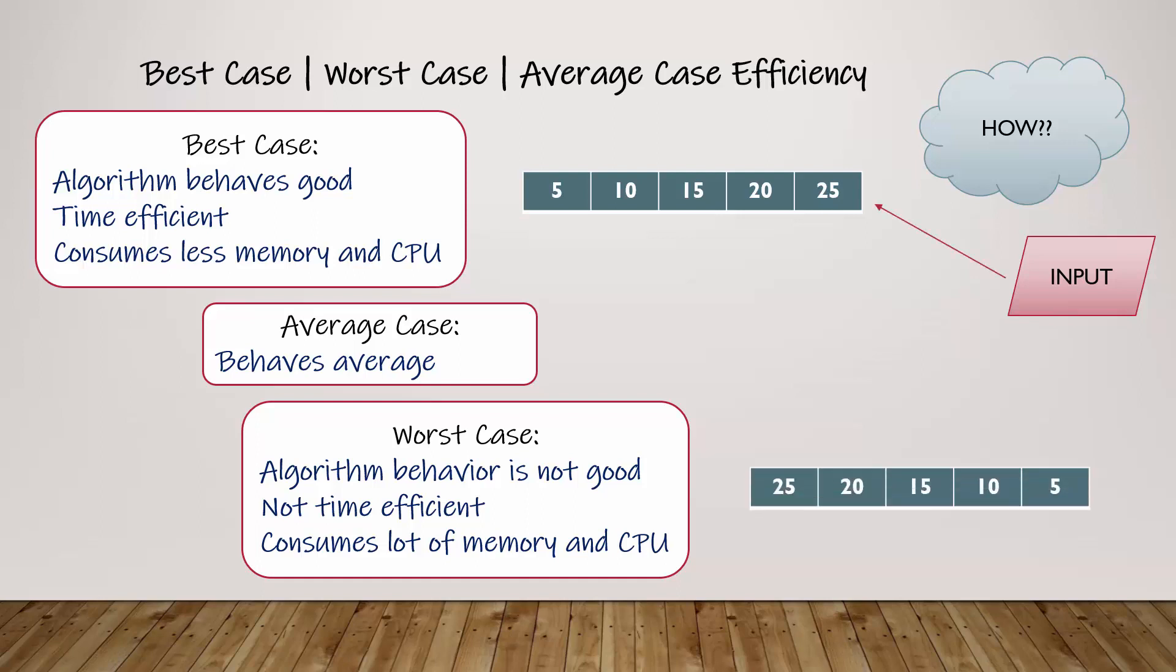Look at this example. Now the data are same but it is in descending order. In this case, if you want to find number 5, you have to iterate through the array until you find the last element. Therefore in this case, you have the worst number of iterations.